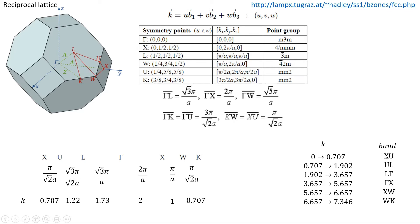When k changes from 0 to 0.707, this sweeps for all the vectors on the edge of the Brillouin zone defined by XU. When k changes from 0.707 to 1.902, it changes from U to L, and so on from L to gamma, and from gamma to X, and from X to W, and from W to K.